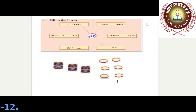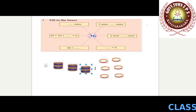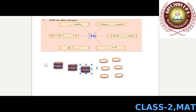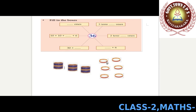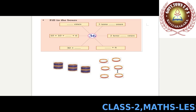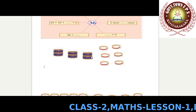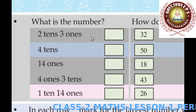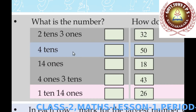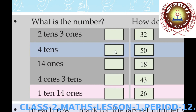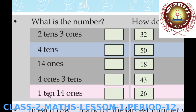Now read and find the numbers: two tens and three ones; four tens and 14 ones; four ones and three tens; one ten and 14 ones. A group of 10 items is one ten. Let's find these numbers using bangles.